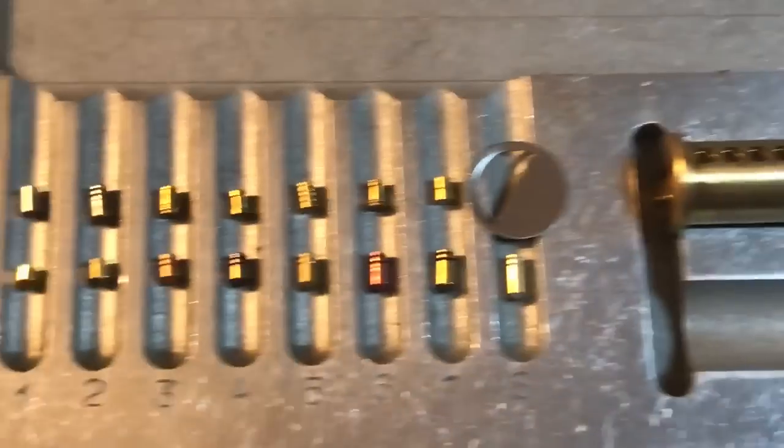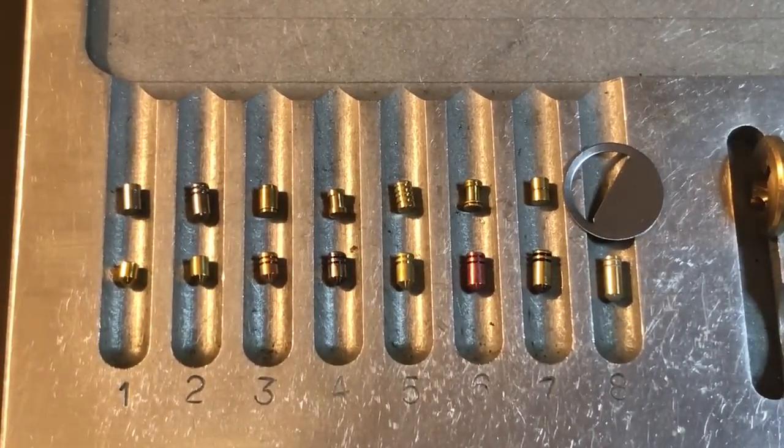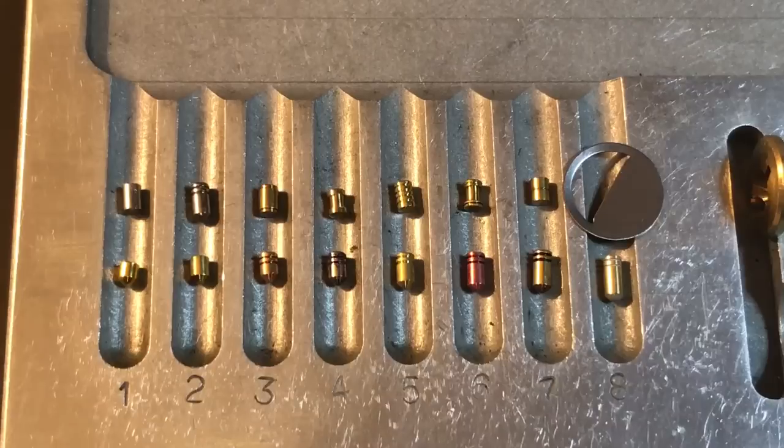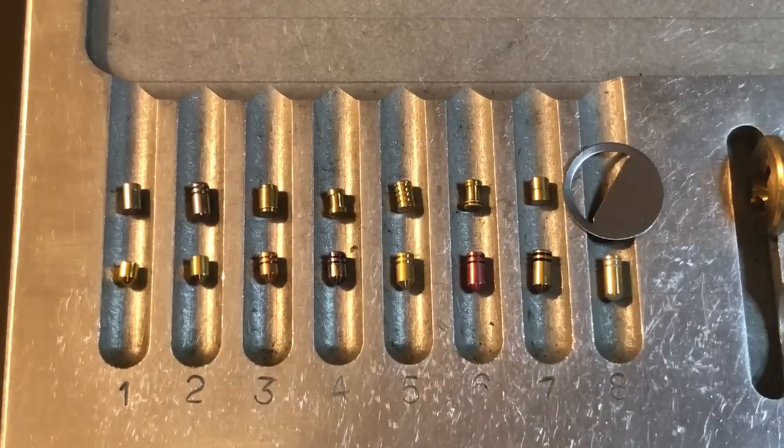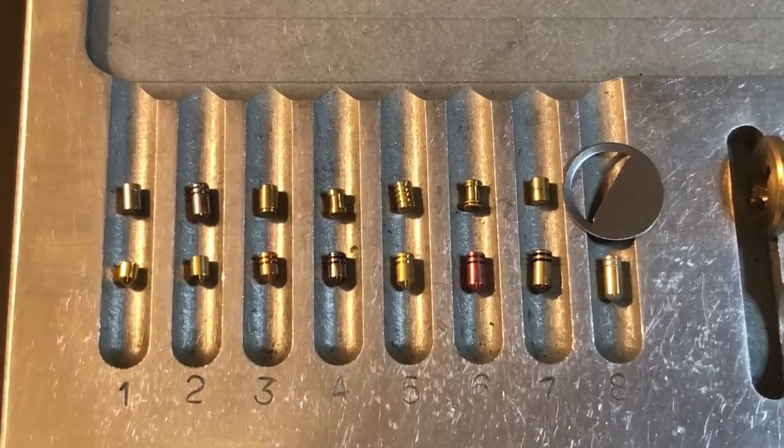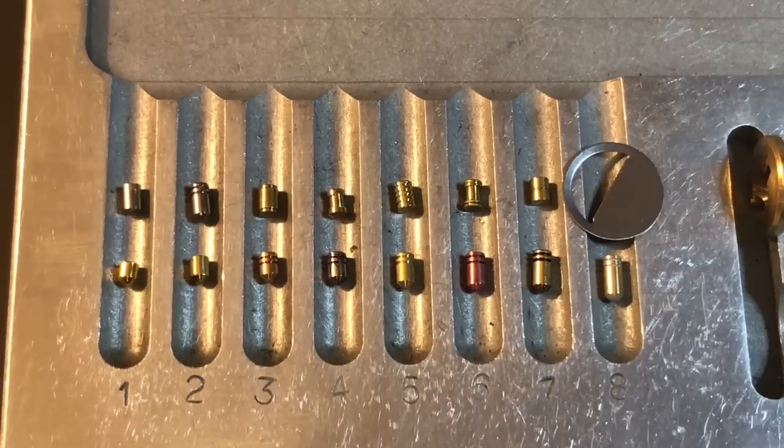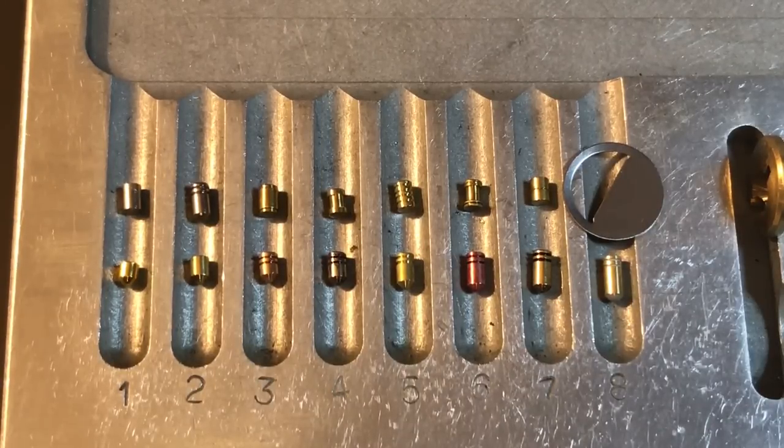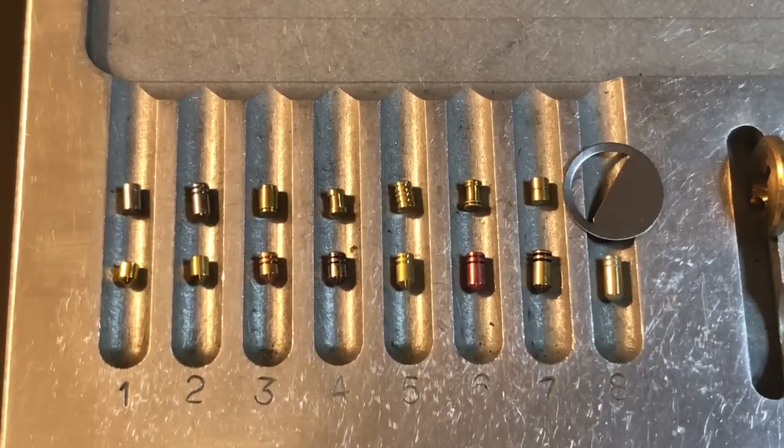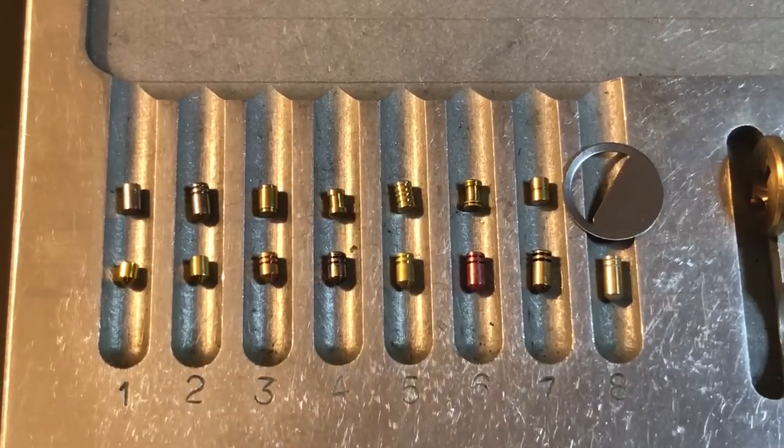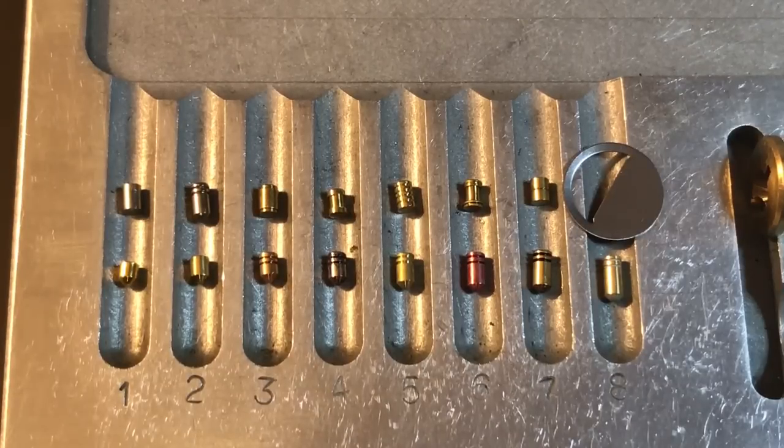So the question now becomes do I need to make any changes in the last two videos' grading because of these clarifications and the answer is no. The master locks each had one ambiguous security pin, one very lightly serrated pin in slot five. I already gave them points as a security pin so there's no need to change anything. Neither of those master locks were of a bypassable design so no issues there either.